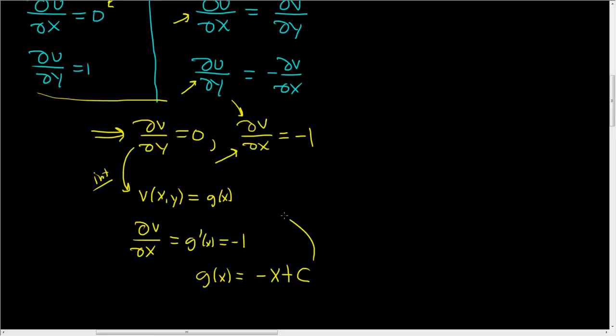And that's it. So v(x,y) is equal to negative x plus C. And there is our harmonic conjugate.